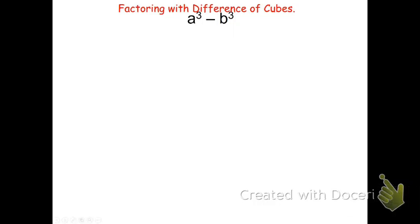Here's an example: a³ - b³. There is a rule to figure out how to factor the difference of cubes. It goes like this: (a - b)(a² + ab + b²).